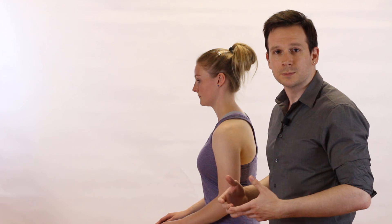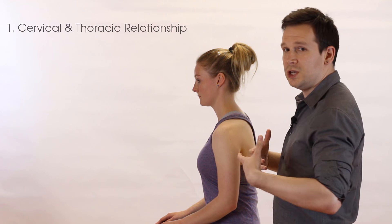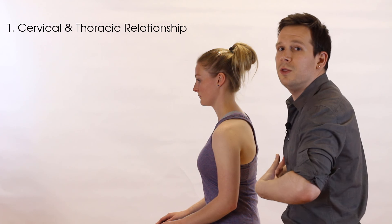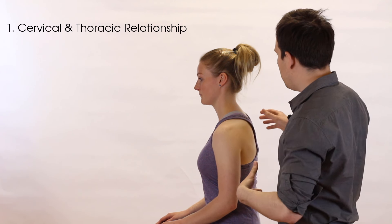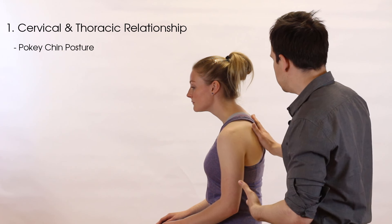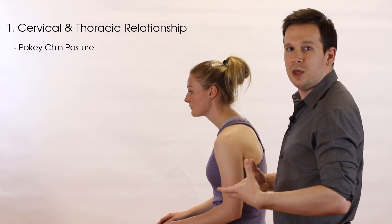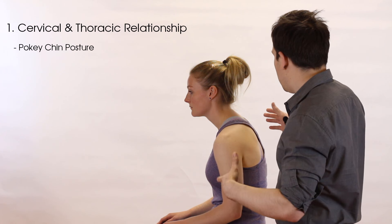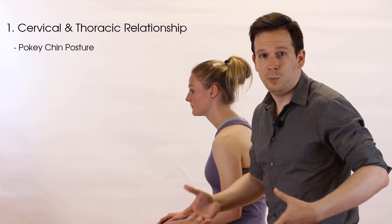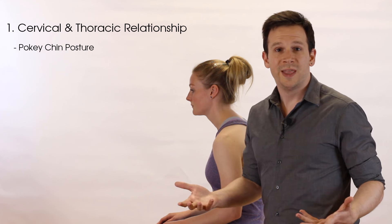Now we're going to look at observation of the shoulder joint in the lateral view. There are two key things to look at here. One is the relationship between the cervical and thoracic spine — the 'pokey chin' posture — where if a patient slumps forward we get this habitual posture that many people adopt, which can be okay but is also a leading cause of many shoulder problems.